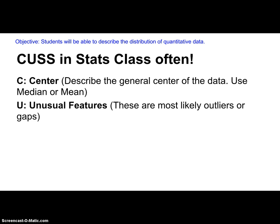Second, you want to talk about U — the unusual. You're not being vain; you're talking about unusual features. U stands for unusual features. Most likely these are two things: either outliers or gaps in your data. You need to identify where the gap would be — that's very important — and any outliers that may exist.